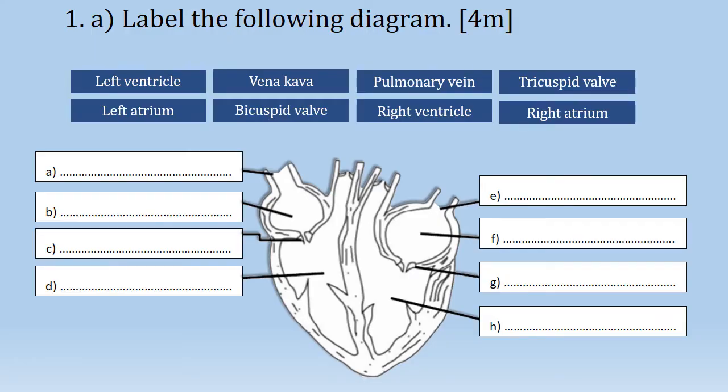Question 1a: label the following diagram, four marks. This is the simple structure of the human heart. The question already provides us with eight optional answers. Let's start answering the left part of the heart first, which carries the oxygenated blood — blood with oxygen.